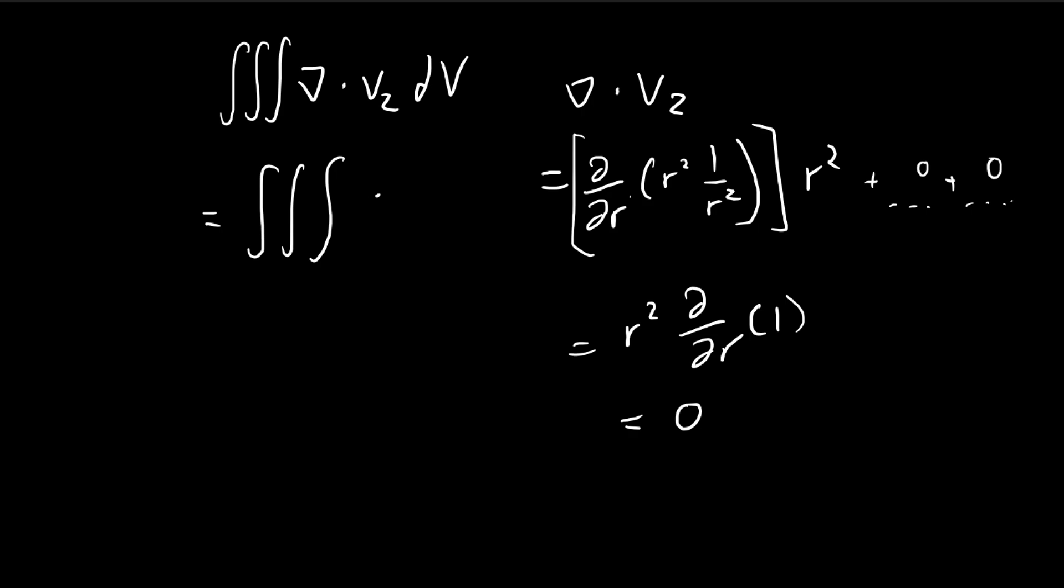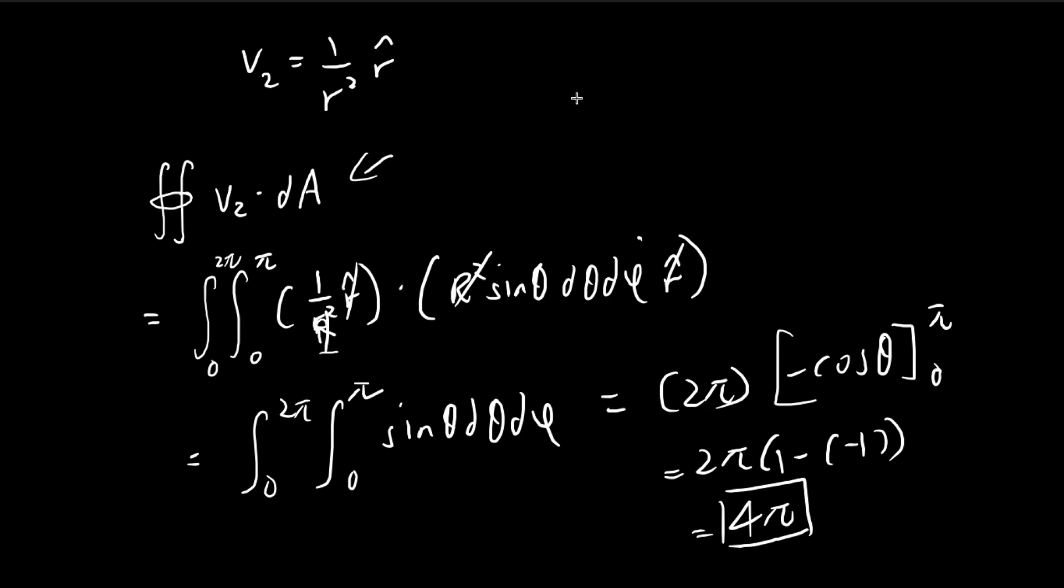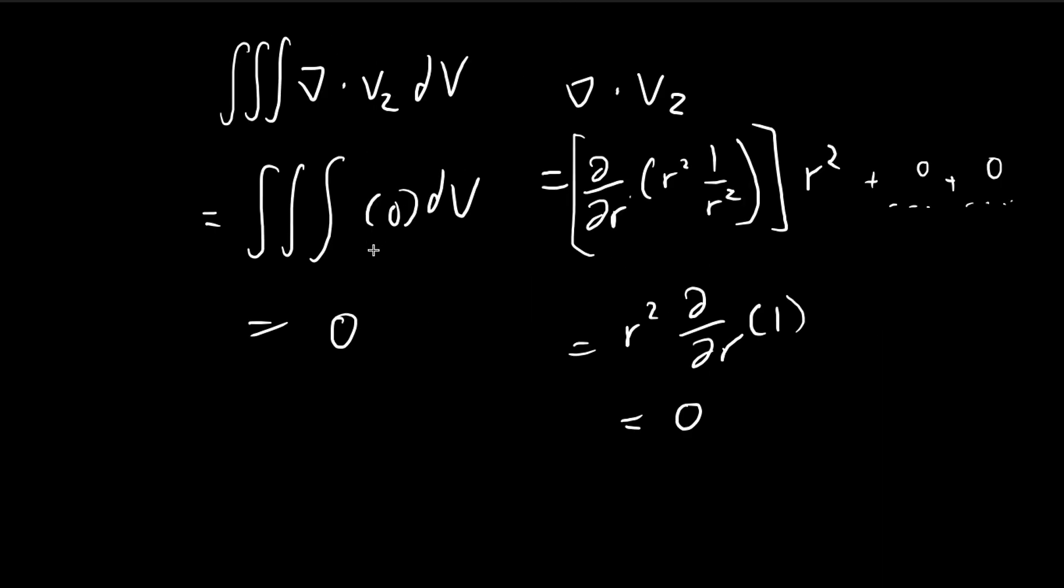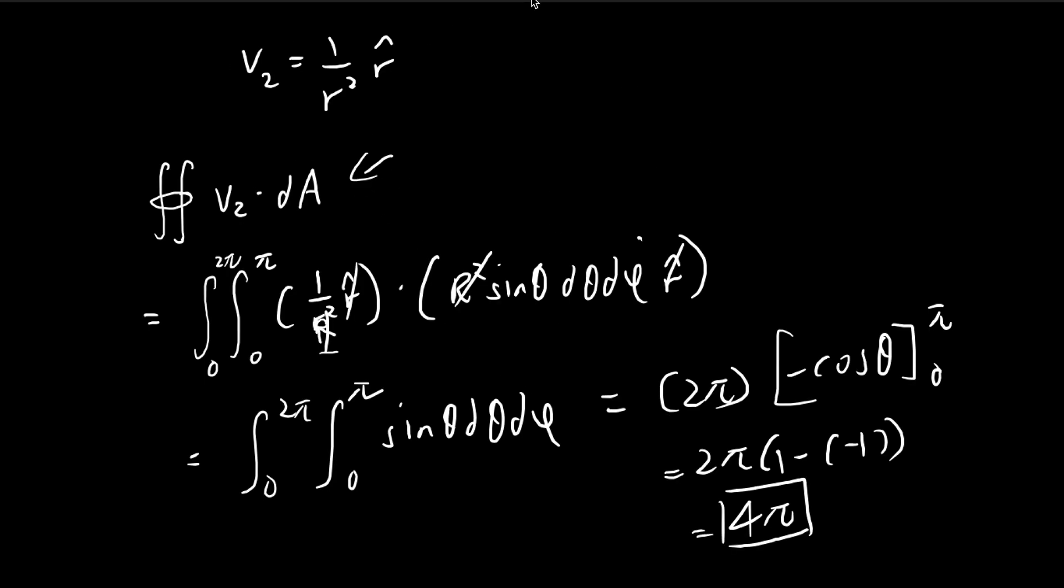You might be surprised. This integral over here, you're integrating 0 over the entire space enclosed by the spherical shell. This should be 0, but this contradicts with this result. This should be 4π, and this is 0. Is there something wrong with the divergence theorem?